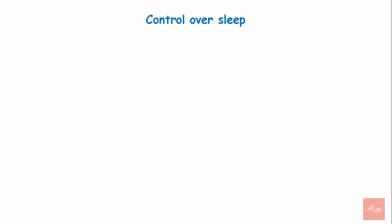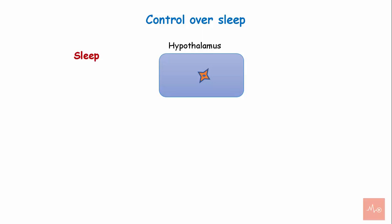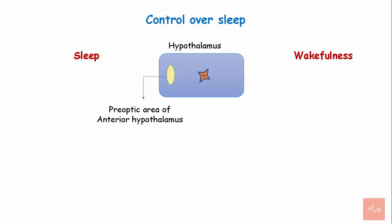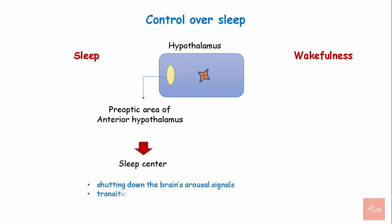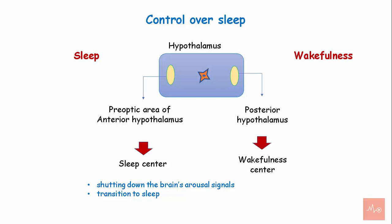Control over sleep. The hypothalamus has a regulatory effect on the activities of sleep and wakefulness. Sleep can be promoted by stimulation of the anterior part of the hypothalamus and activation of the sleep center. Thus, the hypothalamus is responsible for shutting down the brain's arousal signals and causes transition to sleep. Stimulation of the posterior hypothalamus causes activation of the wakefulness center.